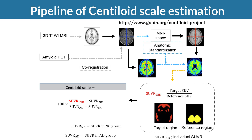The subject PET is co-registered to the co-registered subject MRI. Next, the co-registered subject MRI is warped into Montreal Neurological Institute space. The parameters of the deformation field are applied to the co-registered subject MRI and co-registered subject PET for anatomic standardization. The SUVR is calculated from standardized subject PET counts in a reference region and in the global cortical target region. Finally, the SUVR is converted to centiloid scale values using direct conversion equations for each PET tracer.